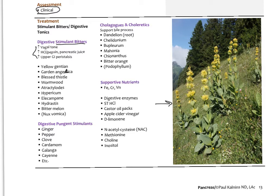Other digestive stimulant herbs include angelica archangelica, blessed thistle, wormwood, white atractylodes, hypericum — used as a digestive stimulant especially in Eastern Europe — elecampane, goldenseal in small amounts (large amounts can dampen the vagus nerve), bitter melon, and nux vomica in homeopathic dilutions only. Many of these herbs have yellow flowers, described as a yellow gesture — like shining yellow light on your abdomen.